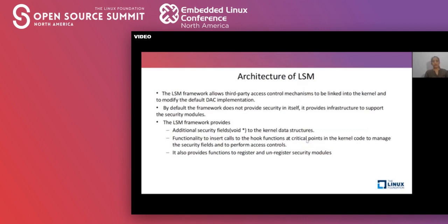Looking at the architecture of LSM further, the LSM framework allows third-party access control mechanisms to be linked into the kernel and allows modifying the default discrete access implementation. By default, the framework itself does not provide any security, but it provides the infrastructure to support security modules. The LSM framework provides security fields — void pointers inside various kernel data structures — and the functionality to insert calls to functions at critical points inside the kernel code to manage those security fields and perform actual access control. It also provides miscellaneous functions to register and unregister security modules.